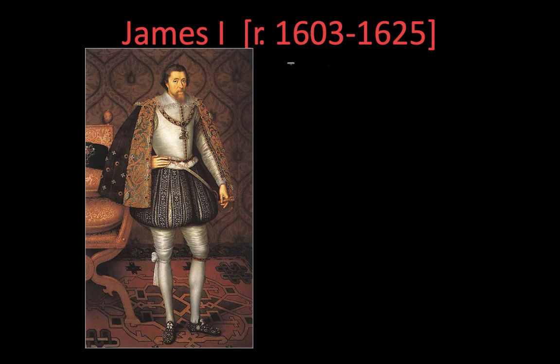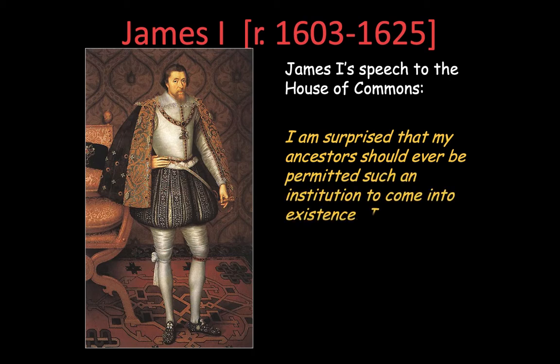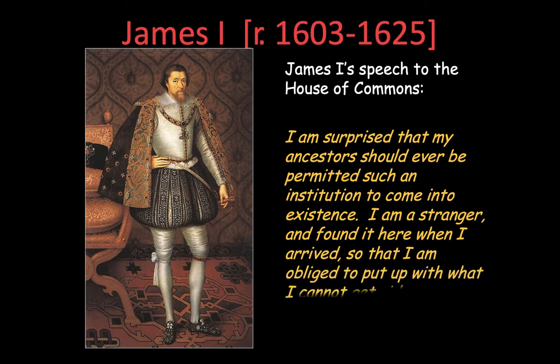James I becomes king after Elizabeth dies — he's her cousin, and he'd already been the king of Scotland. He comes into England and speaks to their Parliament, which has two houses: the House of Lords and the House of Commons. He says, 'I'm surprised my ancestors should ever permit such an institution to come into existence.' He doesn't think Parliament should exist, and this reflects his attitude.